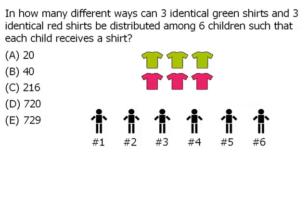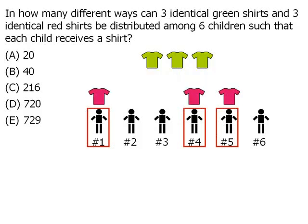Here's one approach: let's choose any three children. Those three chosen children will receive red shirts, and the remaining green shirts will go to the children who have not yet received shirts.